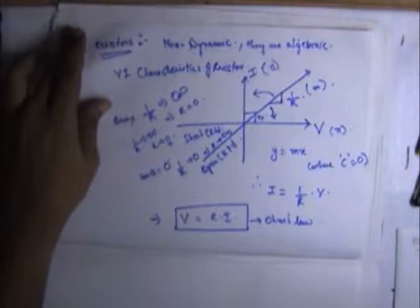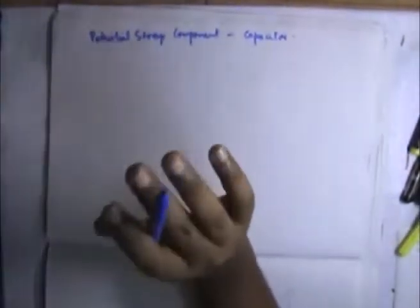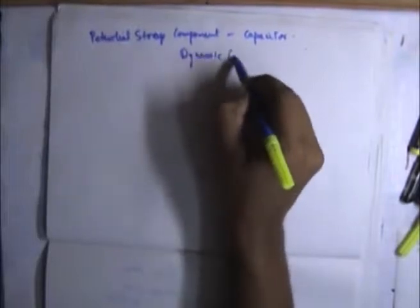The capacitor is a potential energy storage component. The characteristics of a capacitor are that it is a dynamic component — it has memory. It stores past values and the present values depend upon the past values. It is a potential storage component, dynamic in nature, not at all algebraic, and it has memory.